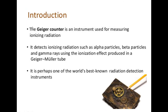Now initially, we discuss about the introductory part. The Geiger counter is an instrument used for measuring the ionizing radiation. It detects ionizing radiation such as alpha particles, beta particles, and gamma rays using the ionization effect produced in a Geiger-Müller tube. It is perhaps one of the world's best known radiation detection instruments.